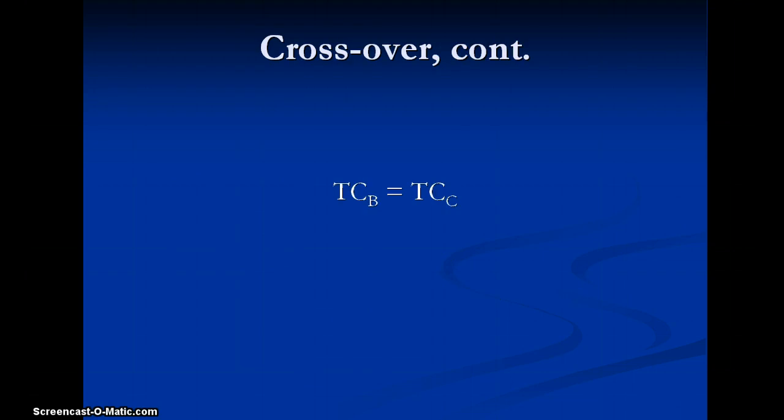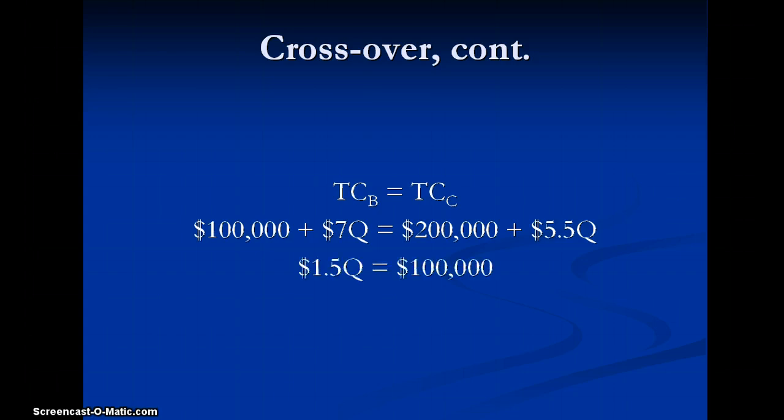We need to do this for the total cost of line B and the total cost of line C because they intersected on that frontier. So substituting in the equations, moving all of the Qs to the left side, all of the numbers to the right, we would get Q equals 66,667.